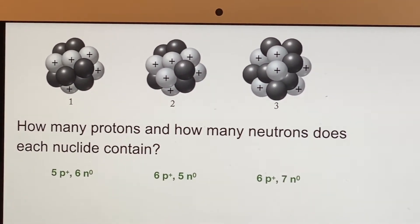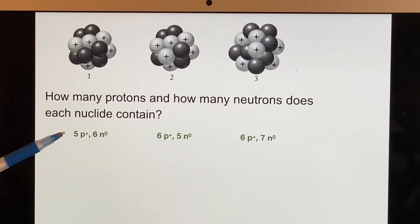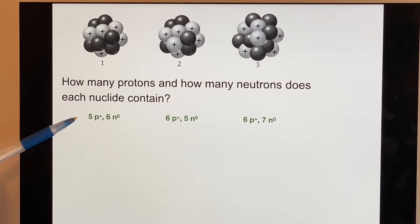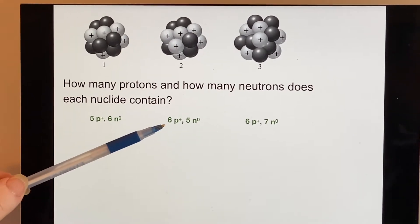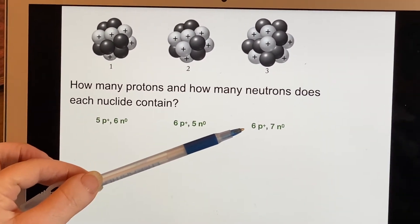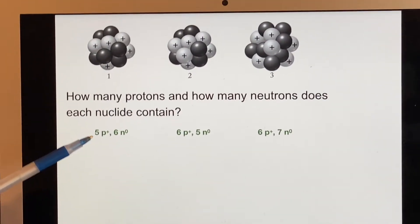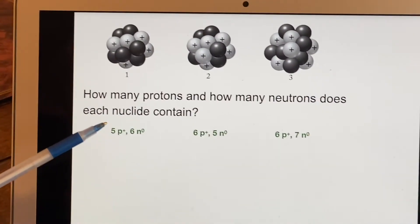The protons, of course, are the same as the atomic number. So we would see that these would both be considered element number six. This is element number five, and you can sit there and think about what those are for a minute.